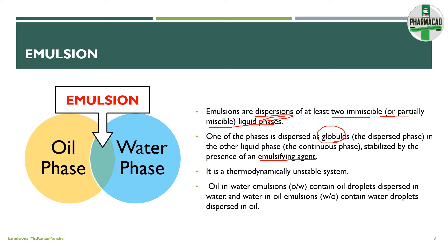and water phase. Emulsions are thermodynamically unstable systems because the phases are not miscible with each other. There is some energy which resists it — the energy which tends to separate the water and the oil phases. Because of that, they are thermodynamically unstable.